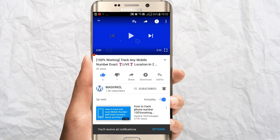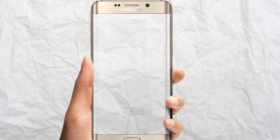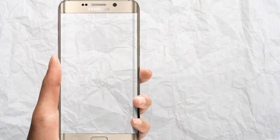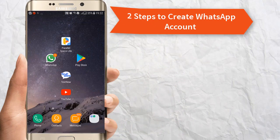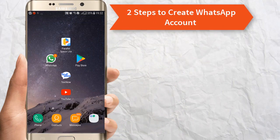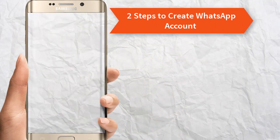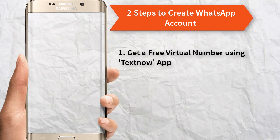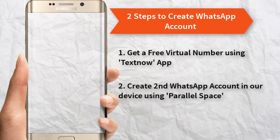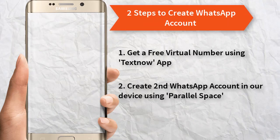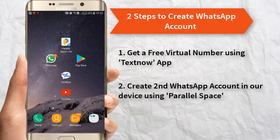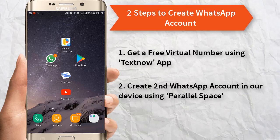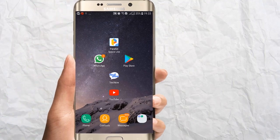Also tap on the bell icon to get notifications of all our latest tricky videos instantly. So let's move further. We will do this in two parts: first, we will get our virtual phone number, and second, we will create the account. To get the virtual phone number, as already explained, we will use the app TextNow.